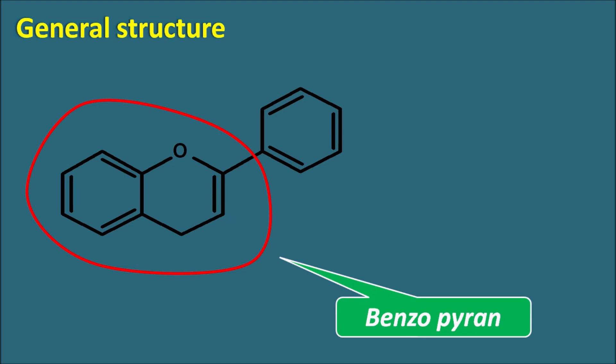Now let us give the numbering to this ring system. We start the numbering from the oxygen, going 1, 2, 3, 4, 5, 6, 7, 8. This is the numbering of the main benzopyran ring system.